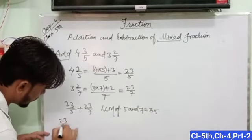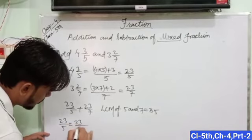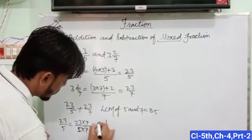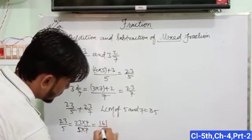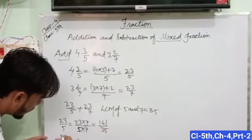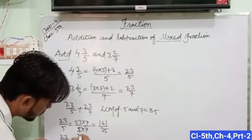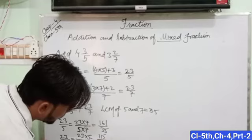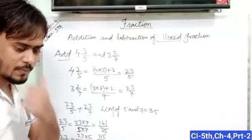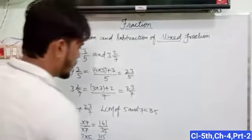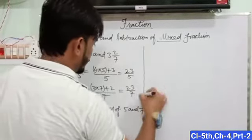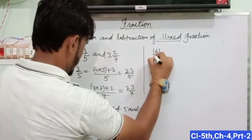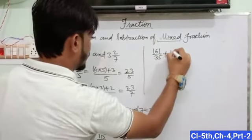Now change 23 upon 5 to denominator 35. 5 into 7 equals 35, so multiply 23 by 7, which gives 161 upon 35. And 23 upon 7, multiply by 5, gives 115 upon 35.